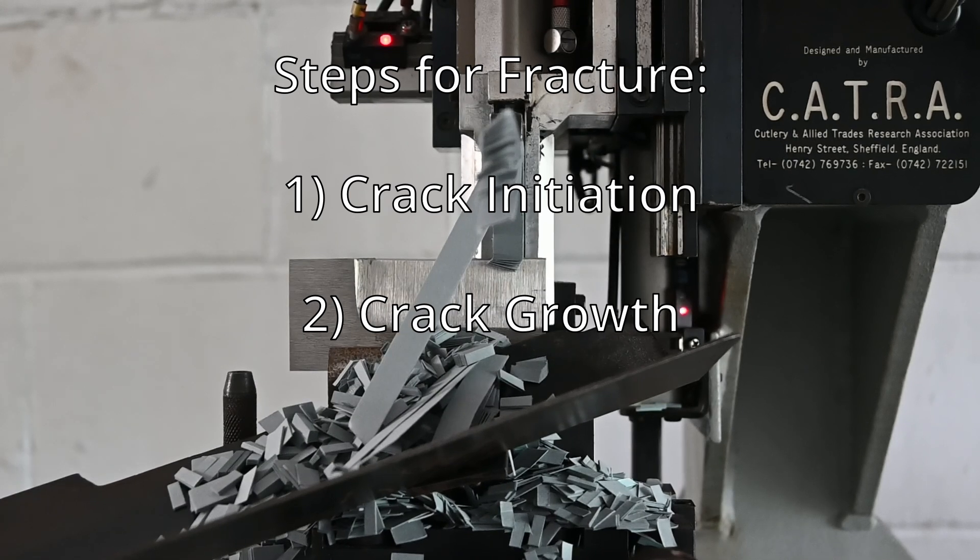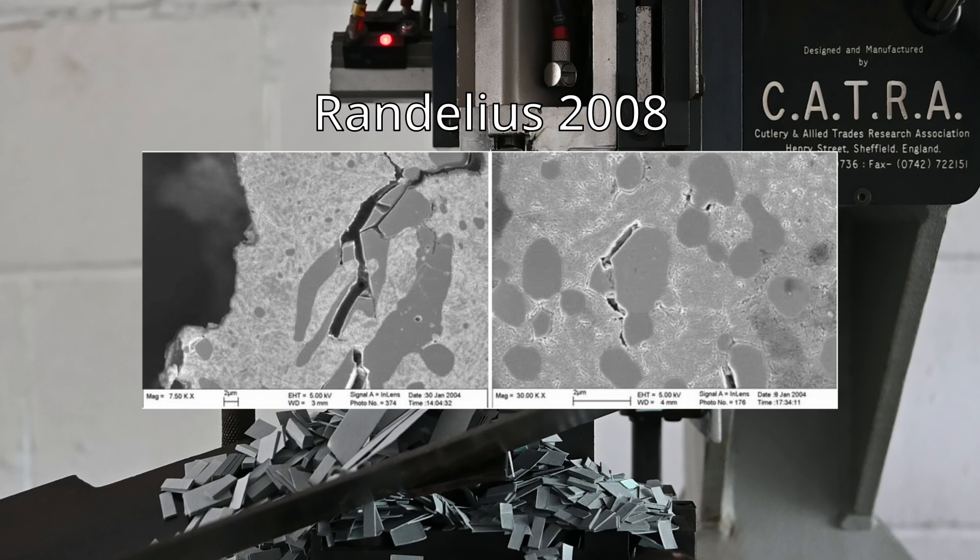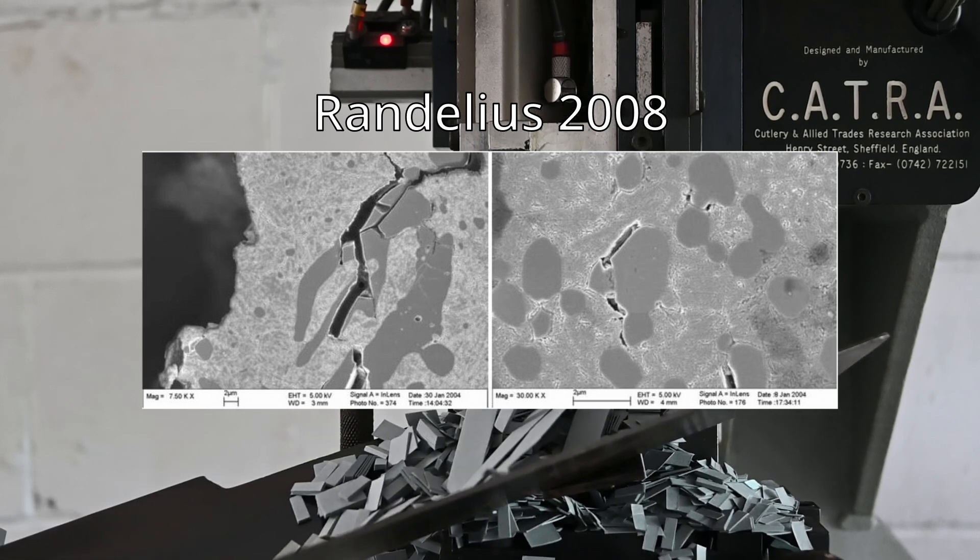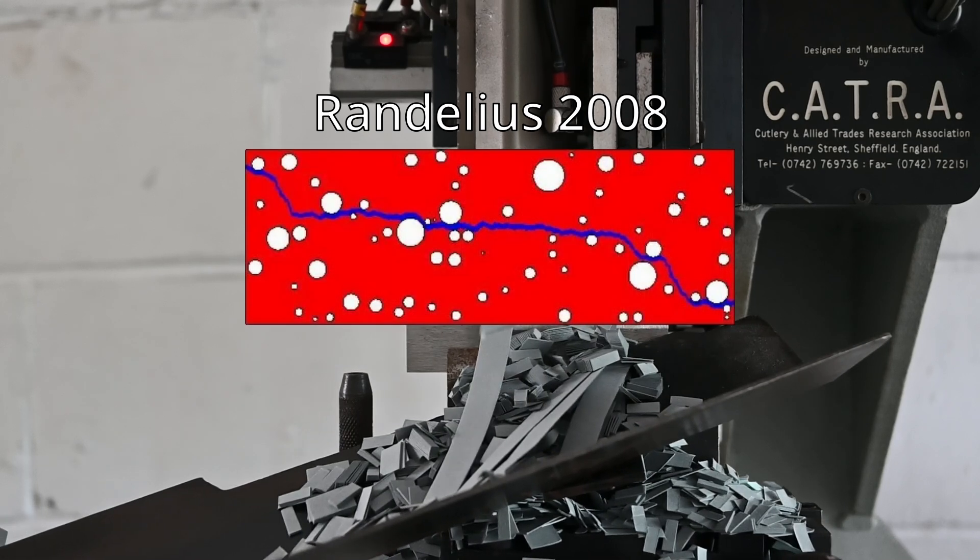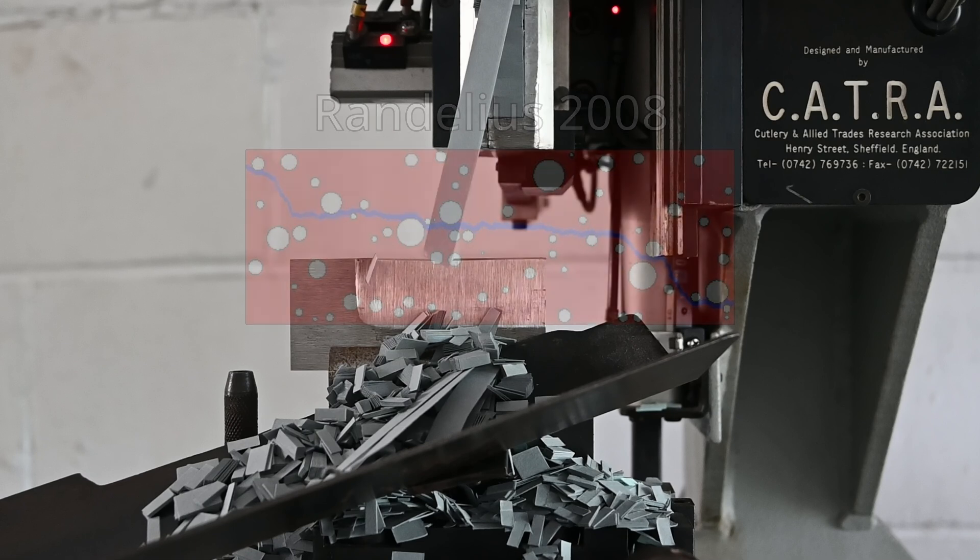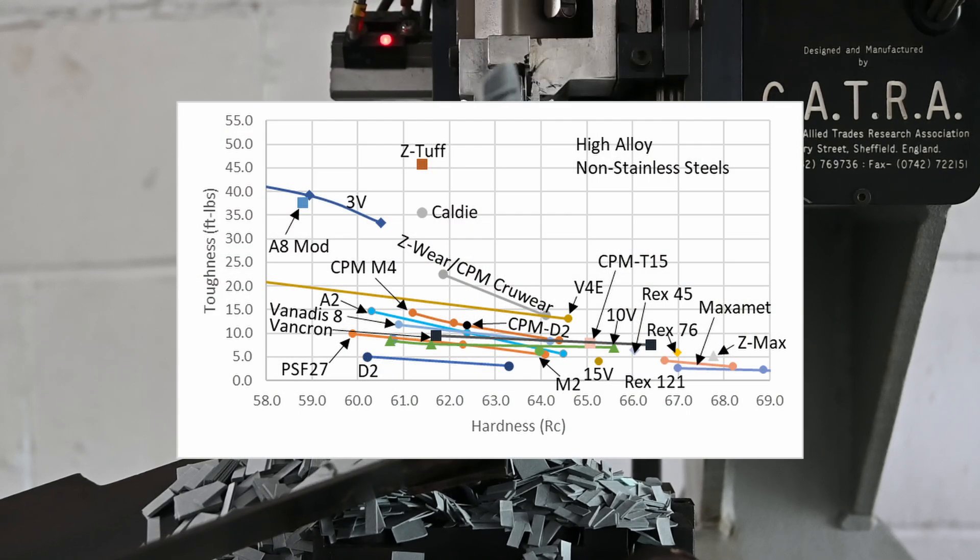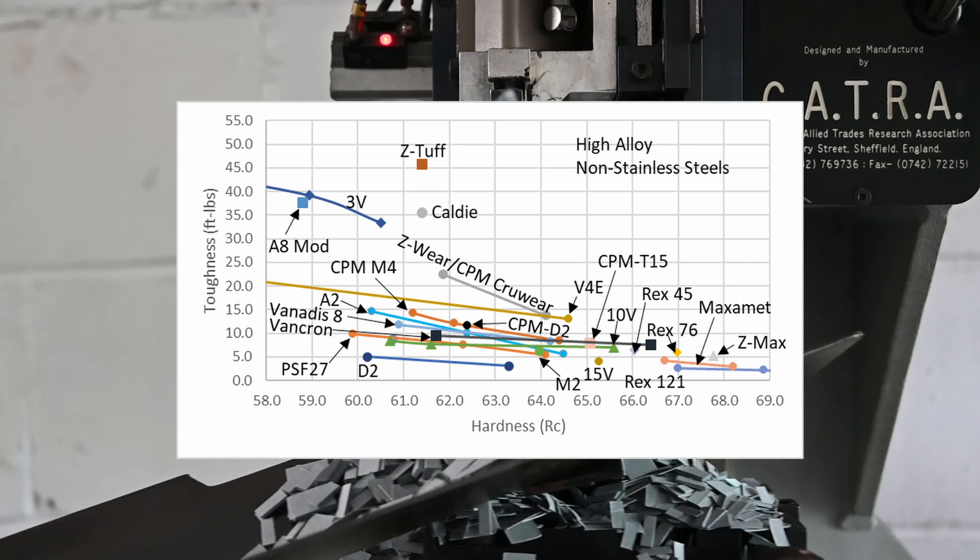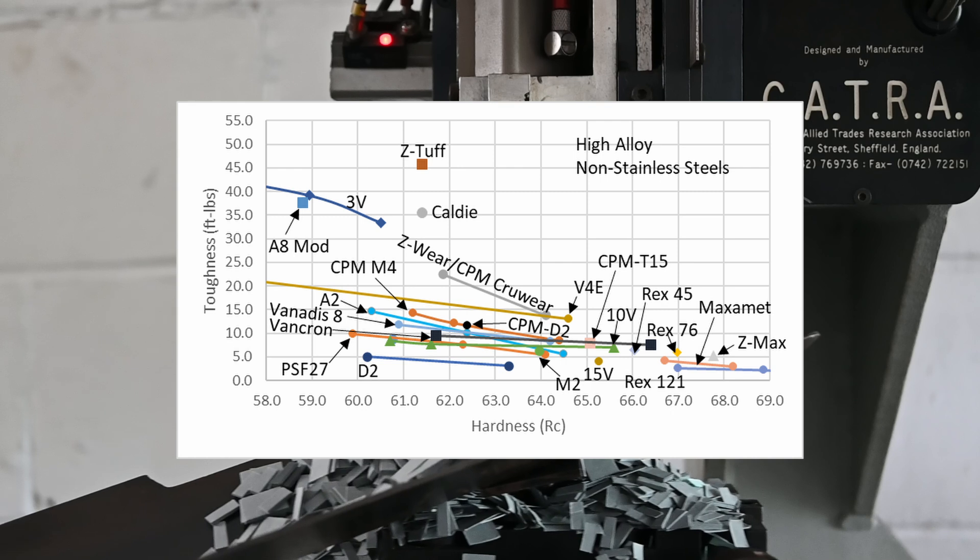Toughness is broken down into two primary steps, crack initiation and crack growth. Crack initiation is controlled mostly by the particle size. Larger particles need less stress to fracture. But crack growth can actually be more rapid if the average distance between particles is shorter. Usually with tool steels, the toughness is limited by crack initiation, but maybe we have gotten to a point where a further reduction in carbide size has led to easier crack growth, and therefore we aren't seeing an improvement in toughness.